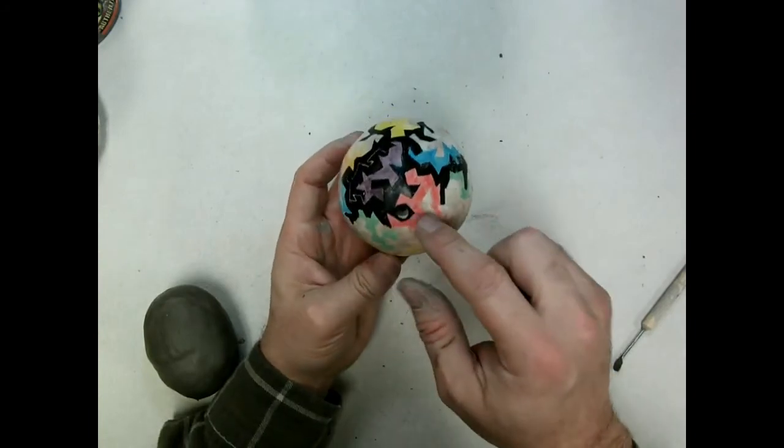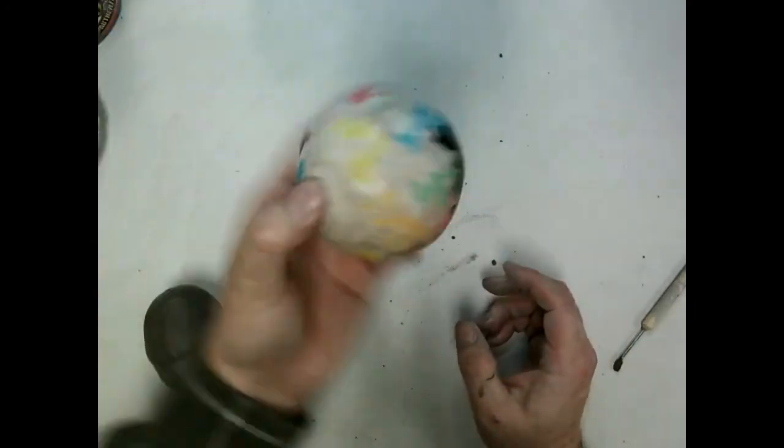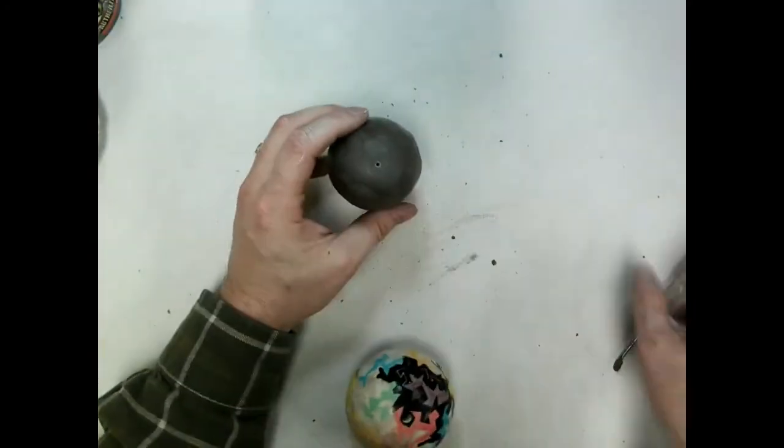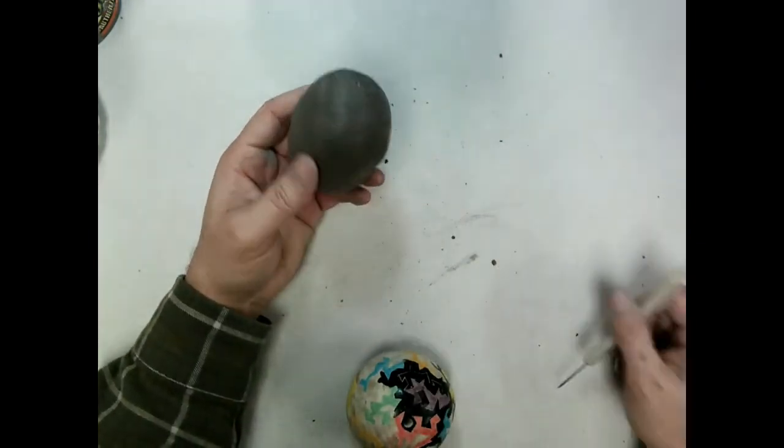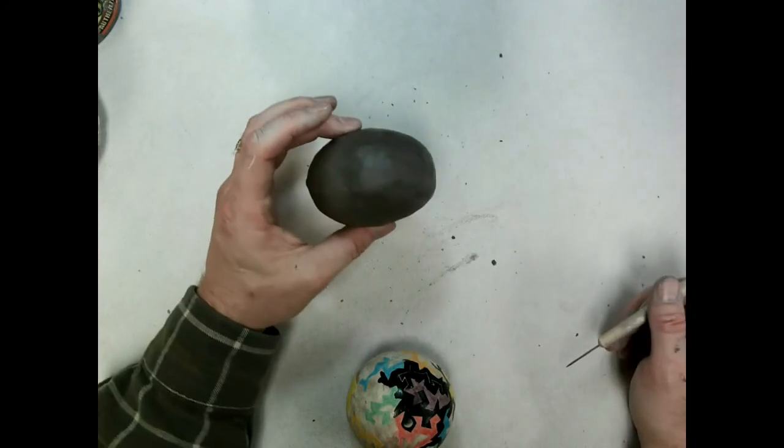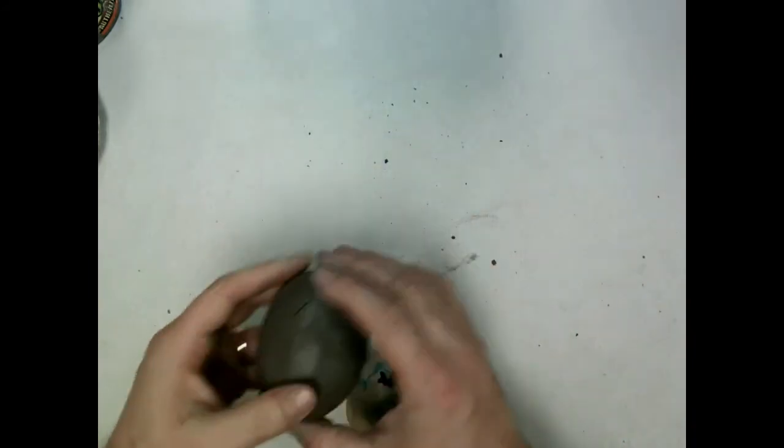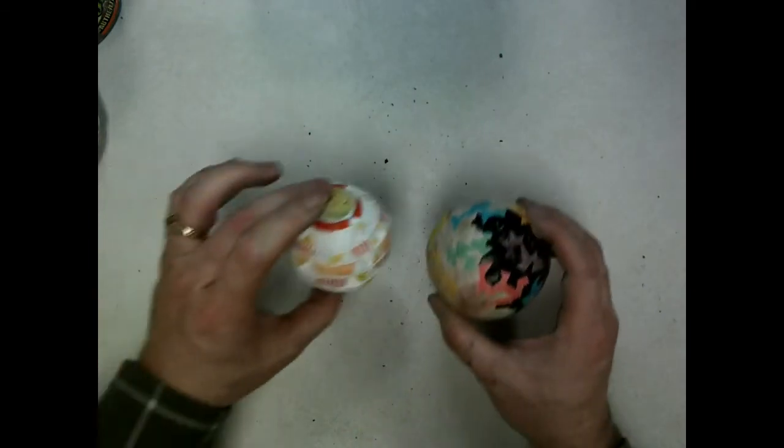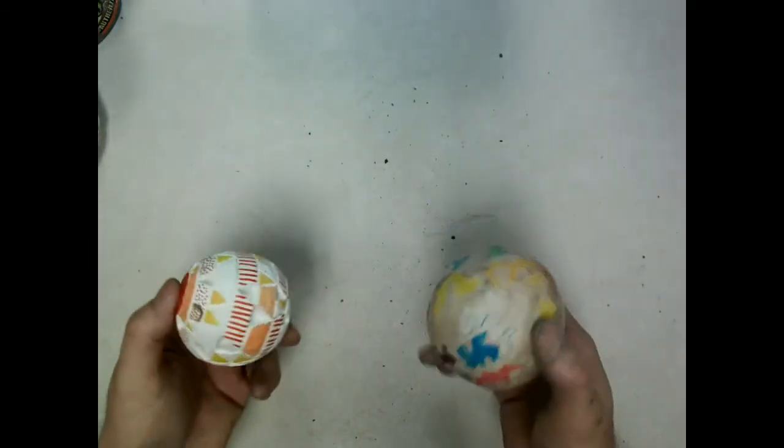So as long as you have some sort of a hole that goes to the inside, then the gas can escape and your rattle will not blow up. And that's how you create a clay rattle. You put the two pinch pots together, and now you can carve into it and design it and make it whatever you want.